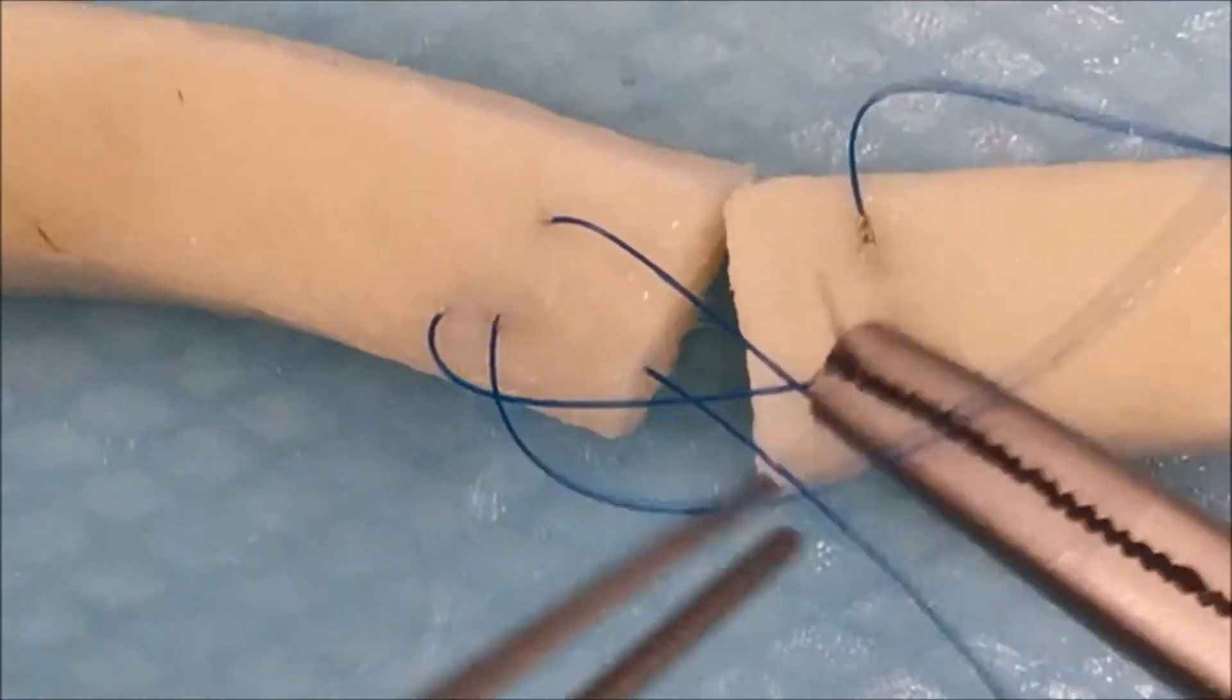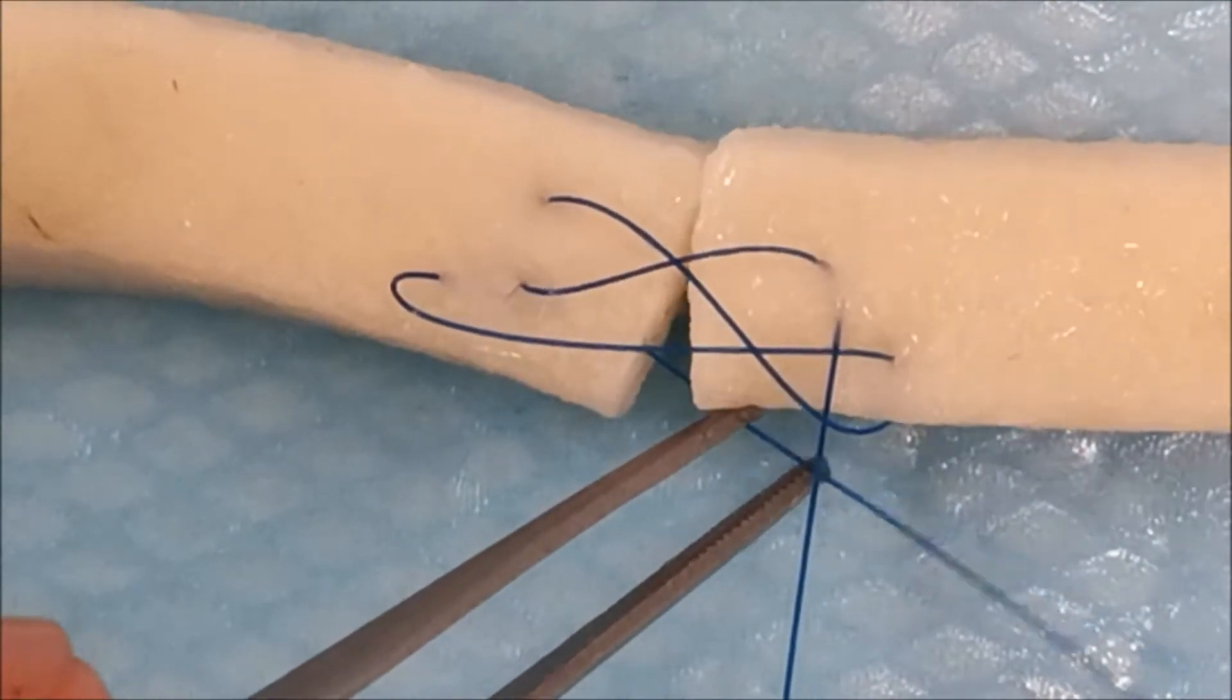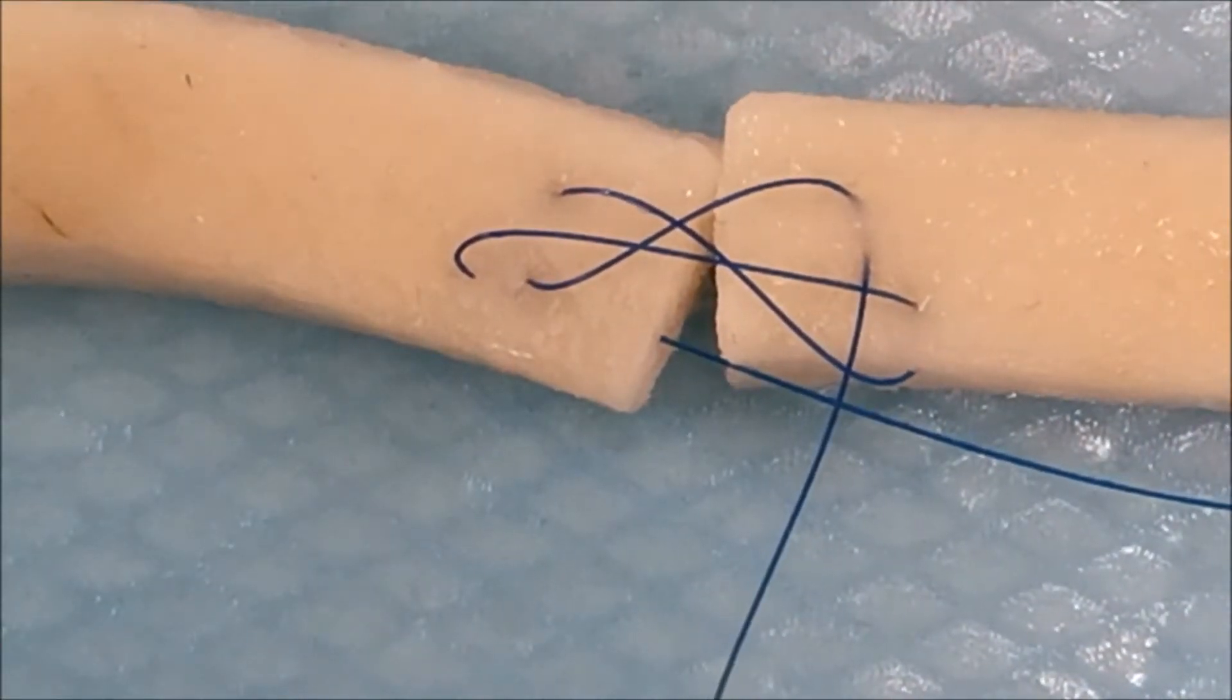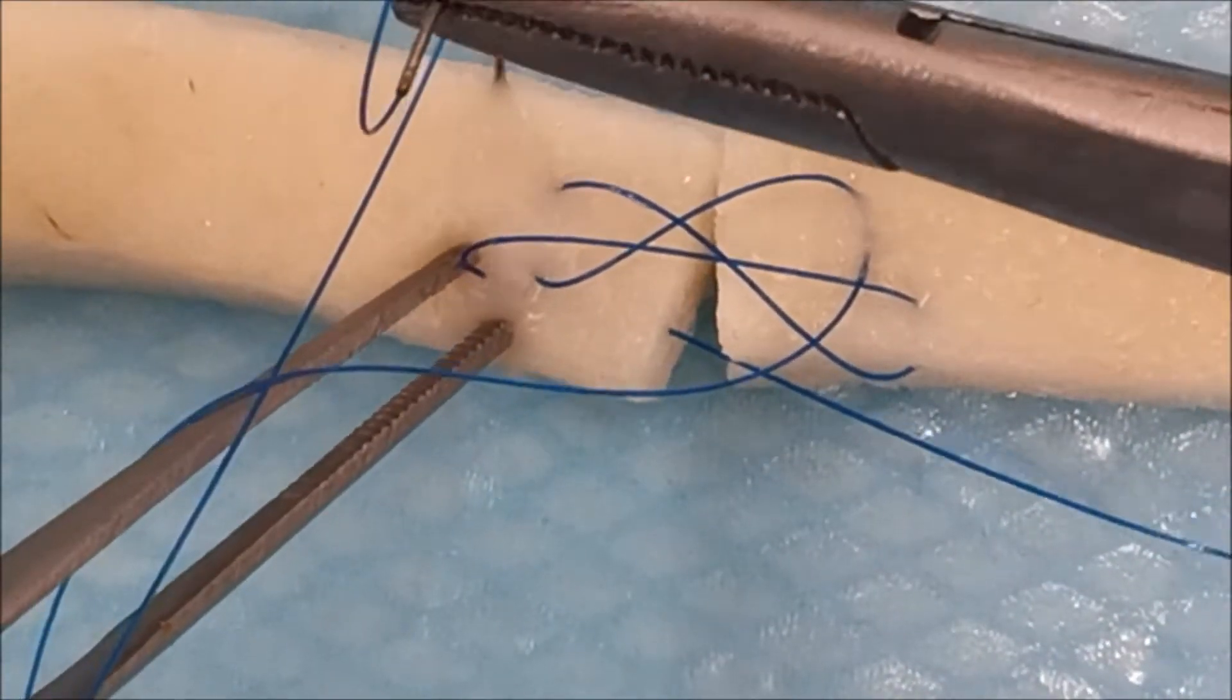Often this is too difficult to do on the back wall and an over and over continuous suture is done on the back wall, whereas a silver skull is used for the front wall.